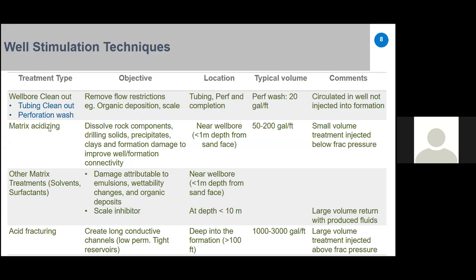The second technique is matrix acidizing. Its objective is to dissolve components such as drilling solids, precipitates, clays, and formation damage to improve well-formation connectivity. Damage typically occurs in the wellbore area, usually less than one meter depth from the sand face. Typical volume is 50 to 200 gallons per foot. This is a small-volume treatment injected below fracture pressure, since we only need to treat the near-wellbore area.